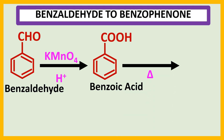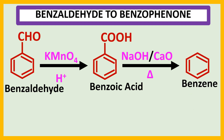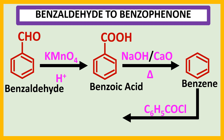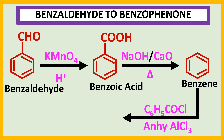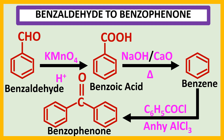In the second step, benzoic acid is heated with soda lime — a mixture of sodium hydroxide and calcium oxide — so benzene is produced. In the third step, when benzene is treated with C₆H₅COCl and anhydrous AlCl₃, benzophenone is produced. So the transformation of benzaldehyde to benzophenone occurs in three steps.